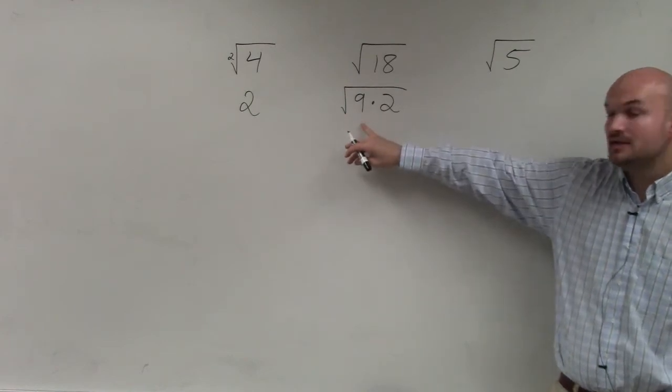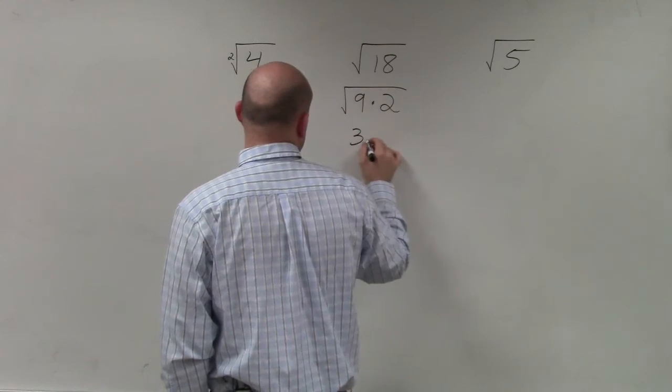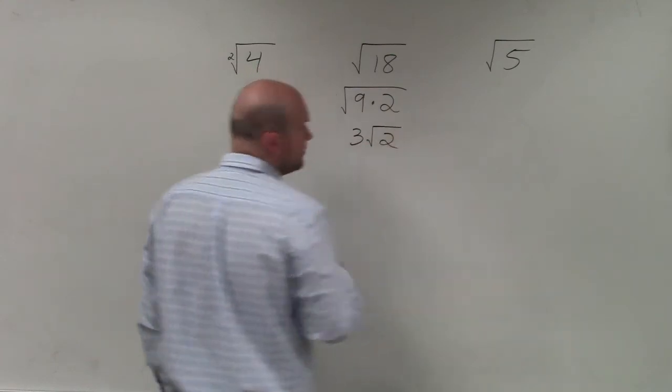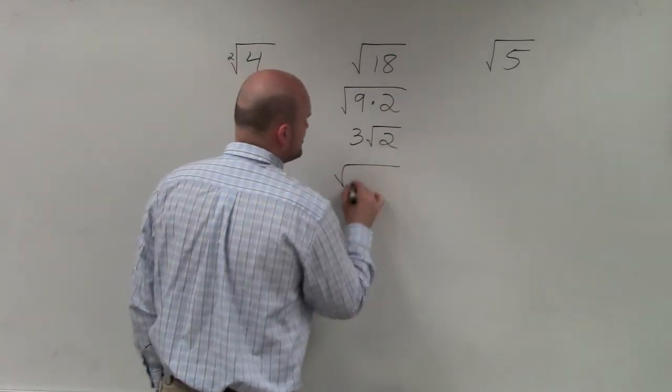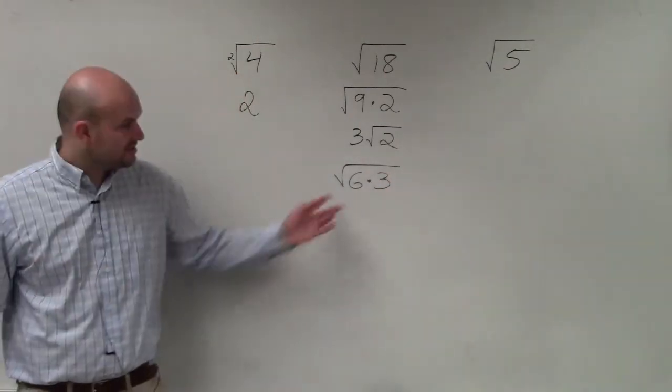So the square root of 9 is 3 times the square root of 2. When you say, 'Well, Mr. McLogan, why don't you break it down into 6 and 3?'